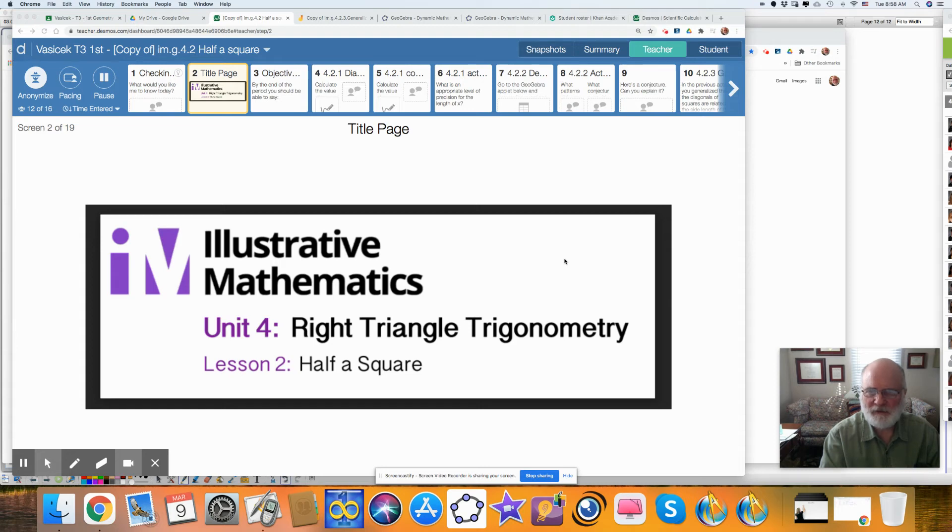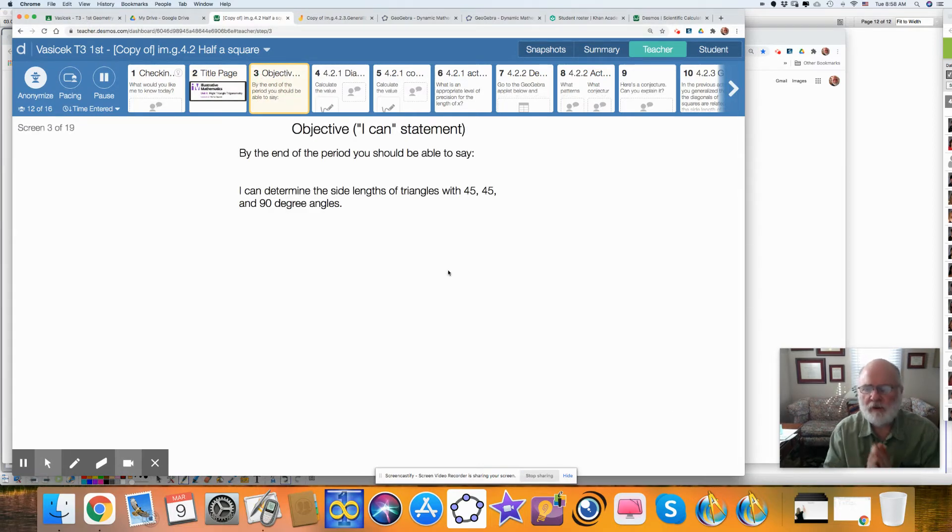Hi, I'm Mr. V, and this is Illustrative Mathematics, our text. We're in Unit 4, Right Triangle Trigonometry, and today's lesson is about half of a square. By the end of the lesson, you should be able to say I can determine the lengths of the sides of a triangle with 45, 45, and 90 degree angles.